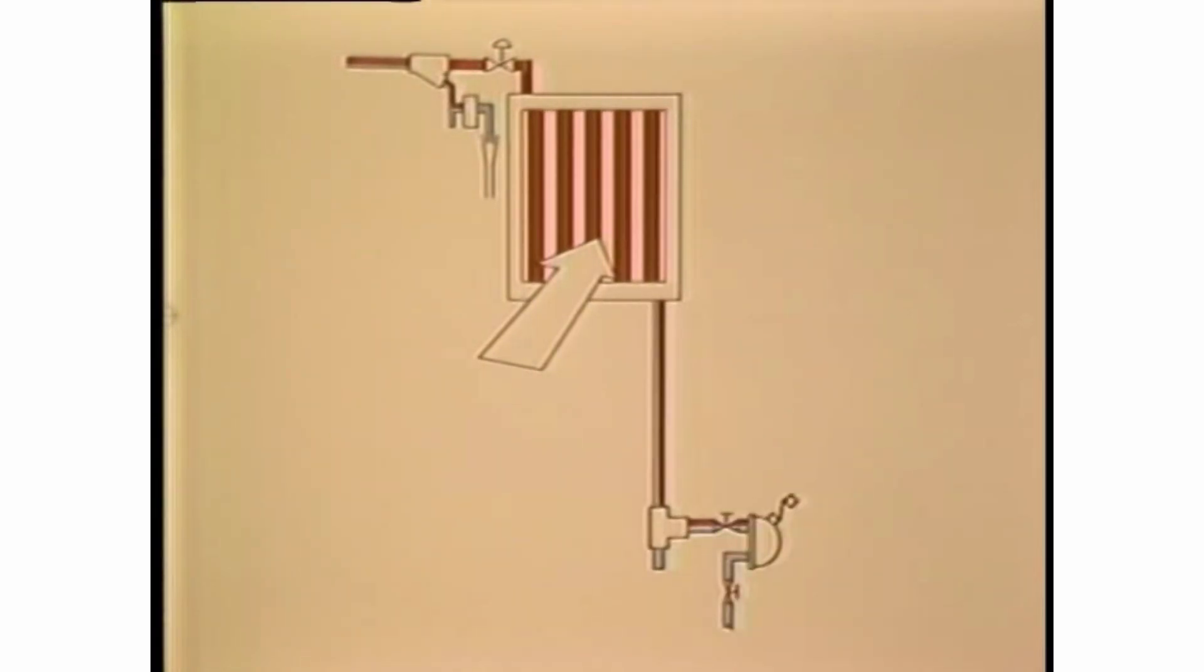To simplify the installation, F and T traps with integral vacuum breakers can be used.